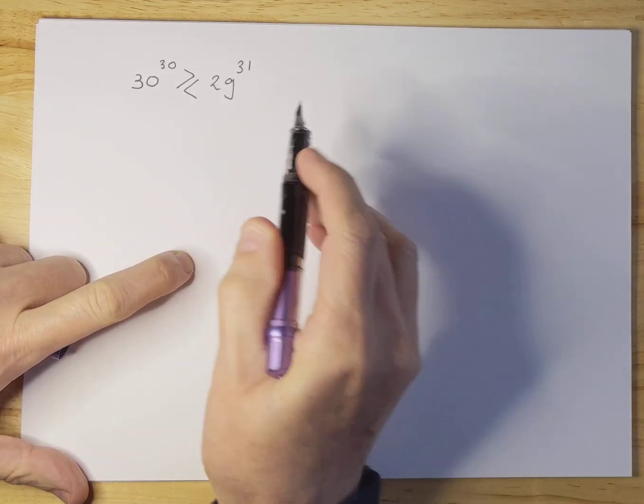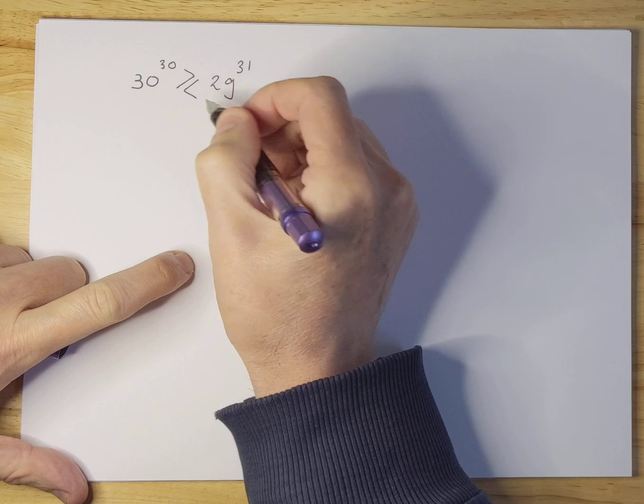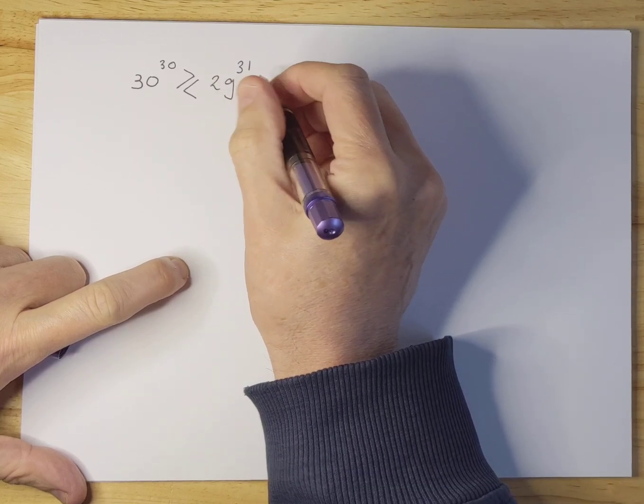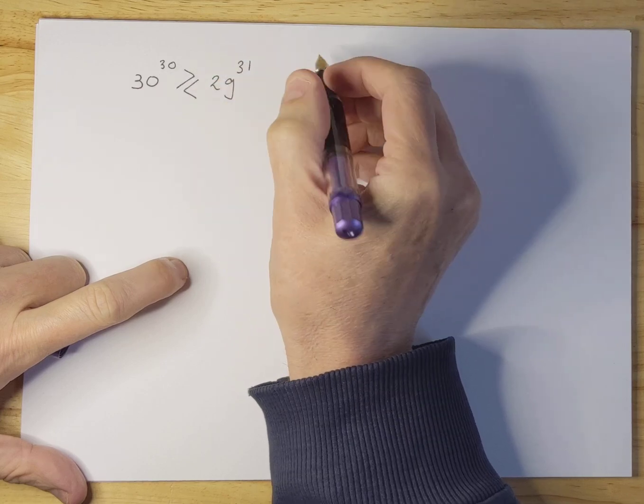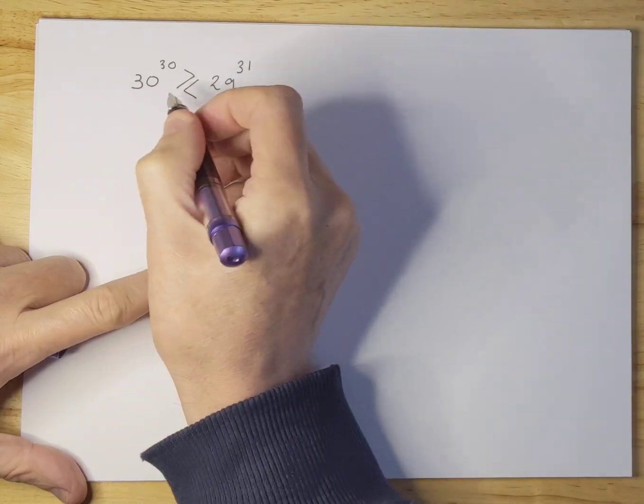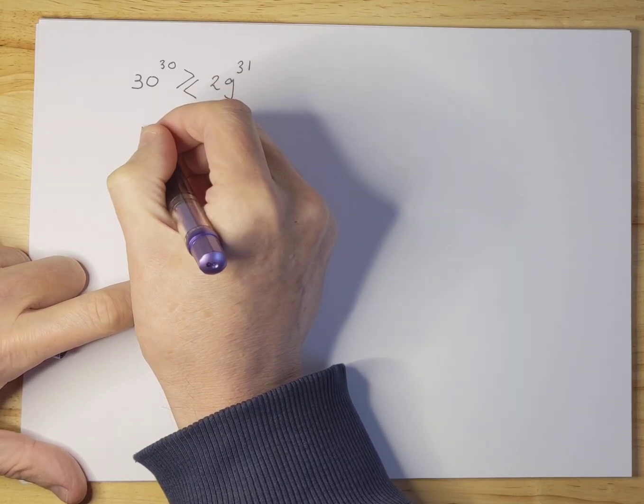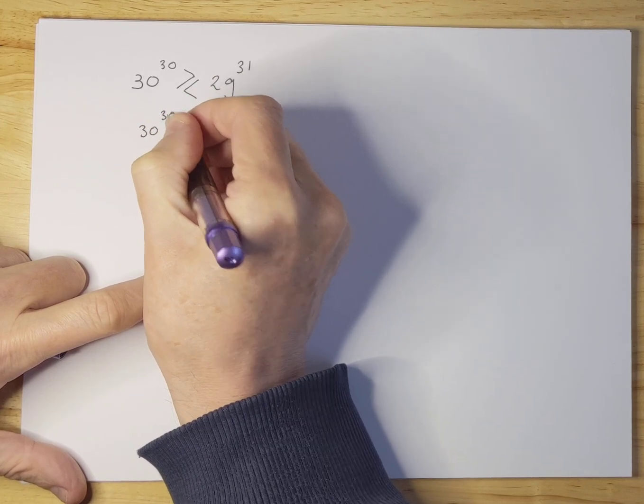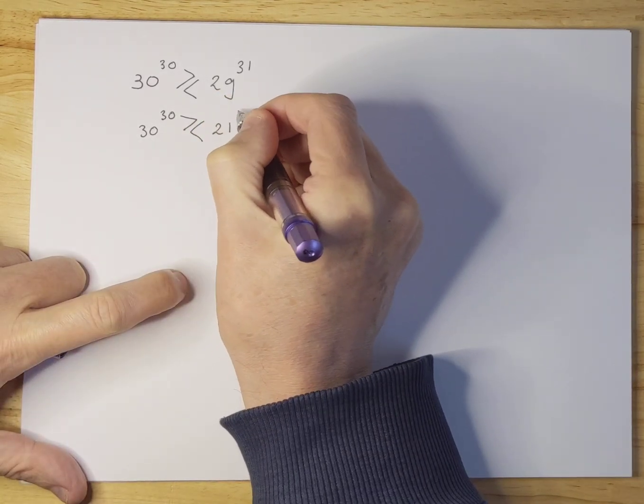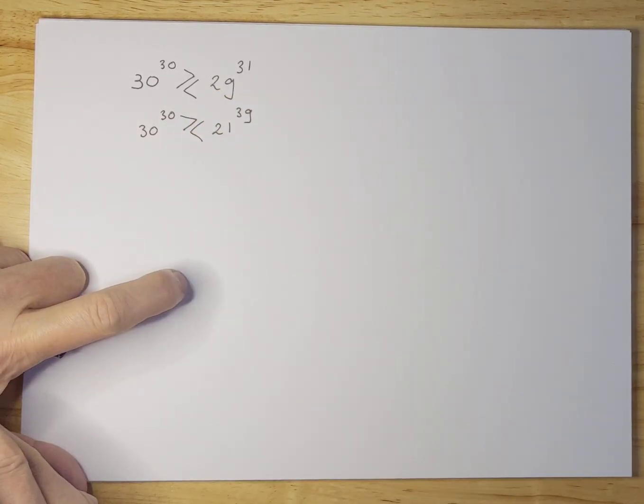What I'm going to do is I'm going to generalize this a little bit and based on that we are going to derive which one is bigger and which one is smaller in a more generic fashion. So you cannot only attack things like this but you can also attack things like 50 to the 50 bigger or smaller than 21 to the 39 for instance.